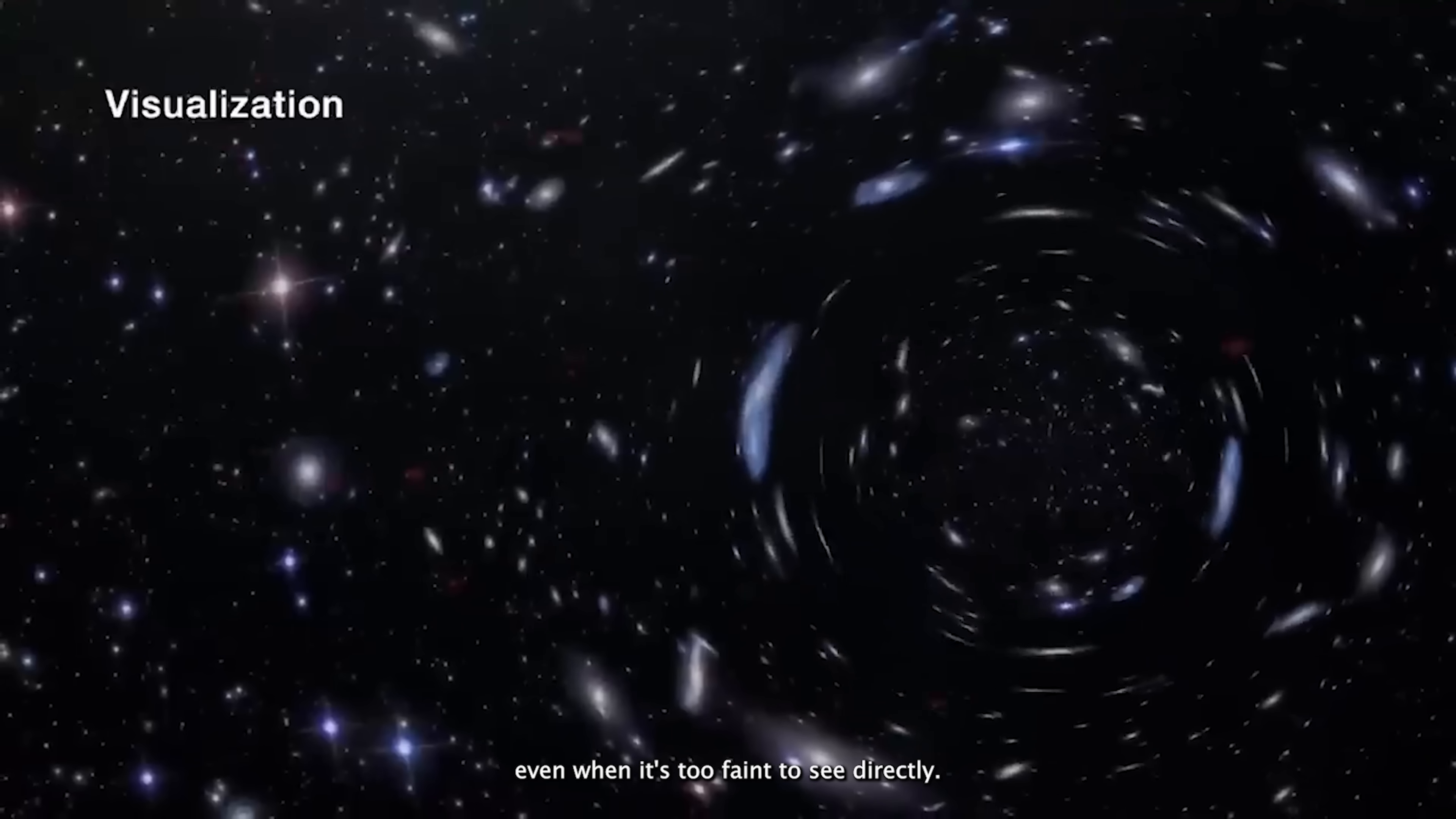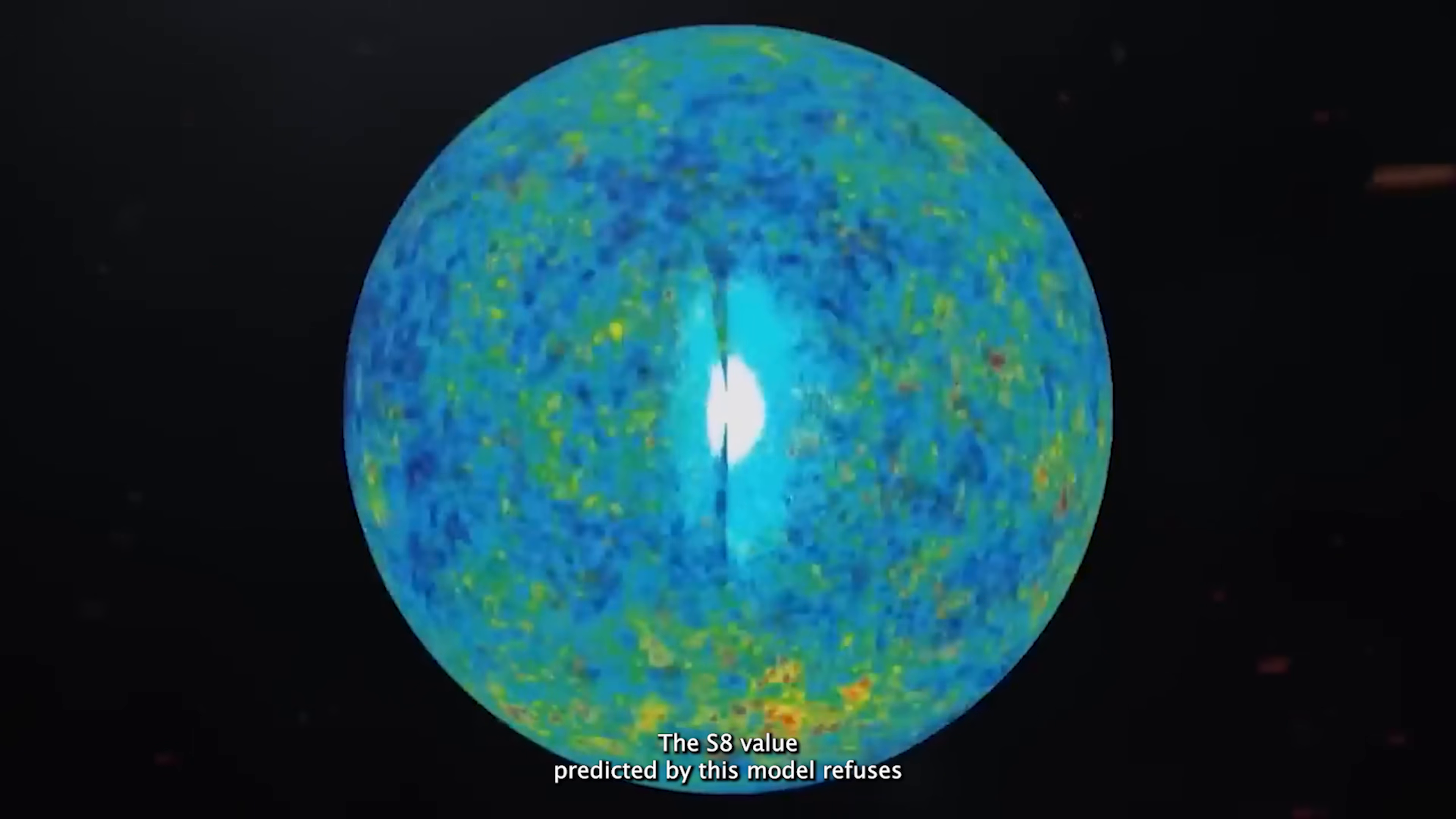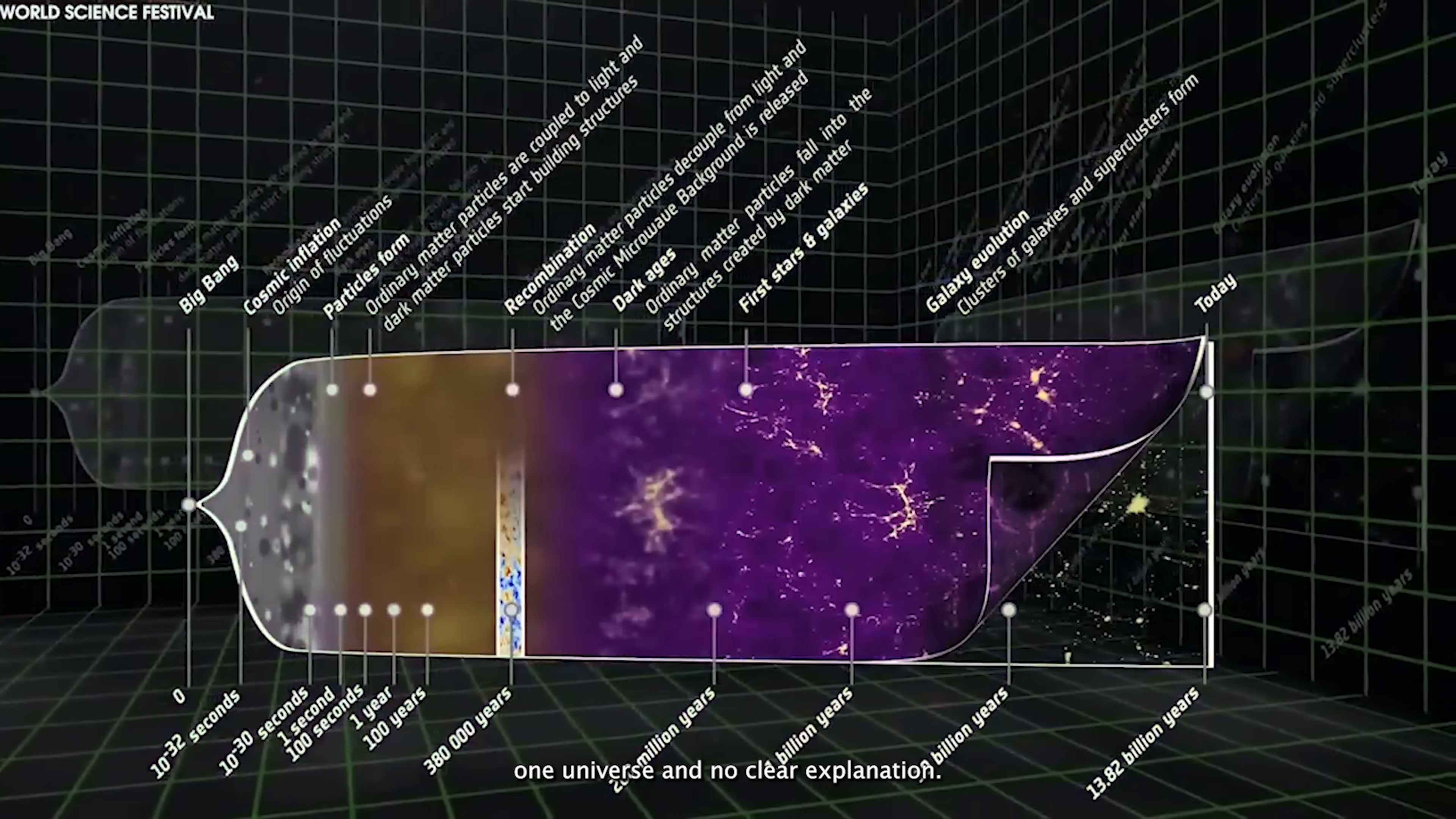The second method relies on the standard cosmological model, built on measurements of the cosmic microwave background. And here lies the crisis. The S8 value predicted by this model refuses to match the S8 value measured through weak lensing. Two approaches, two answers, one universe, and no clear explanation.